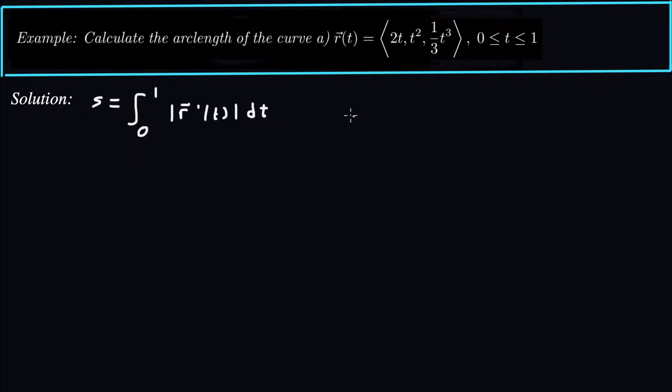So what that means is we need R prime of t. So what's R prime of t? Just differentiate this thing, and that's going to be 2, 2t, t squared.